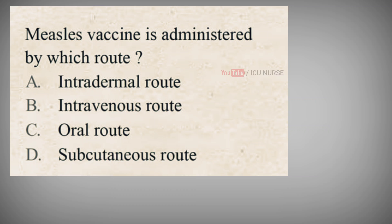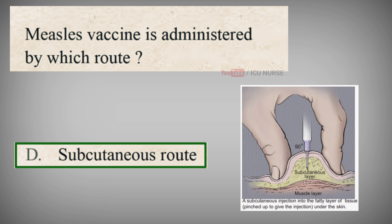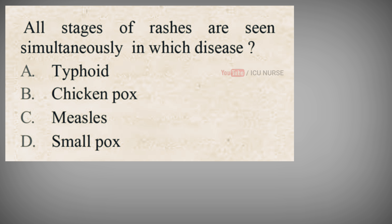Measles vaccine is administered by which route? A. Intradermal route, B. Intravenous route, C. Oral route, D. Subcutaneous route. The correct answer is D. Subcutaneous route. Measles vaccine is administered by subcutaneous route.